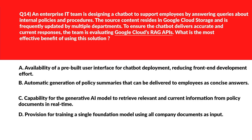Now let's look at this question. We'll first look at option A. A says the ability of a pre-built user interface for chatbot deployment reducing front-end deployment effort. UI ability supports deployment but doesn't enhance document retrieval — wrong answer. We'll move to B. B says automatic generation of policy summaries that can be delivered to employees as concise answers. Summary generation simplifies output but lacks real-time document access — we'll delete this.